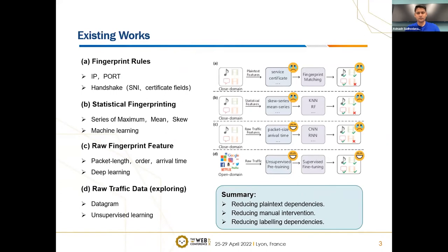In the field of encrypted traffic identification, there are four major existing research approaches. The first is fingerprint rules, which usually relies on plaintext content and expert knowledge. The second is status quo fingerprinting, which uses status quo features of external behavior but still relies on expert knowledge. The third is raw fingerprint features, using supervised learning to automatically categorize raw features. The last is representation of raw traffic using unsupervised learning, which is still in the exploration phase and does not rely on large-scale labeled data.